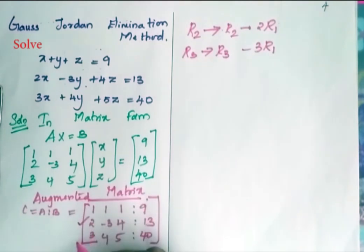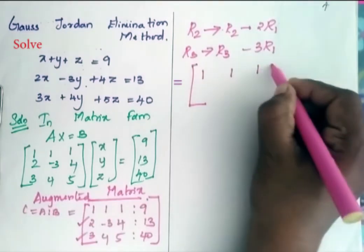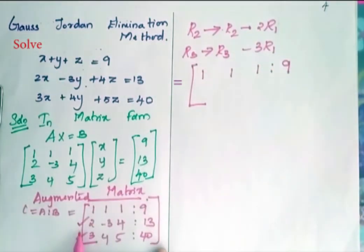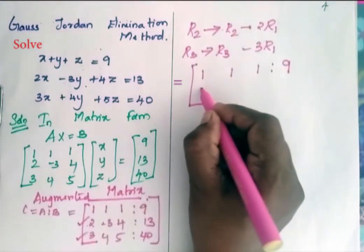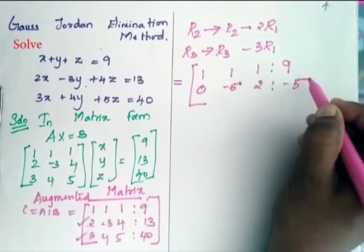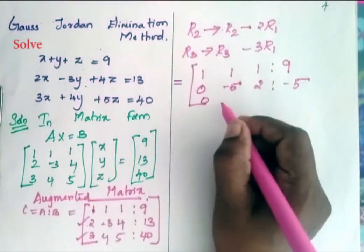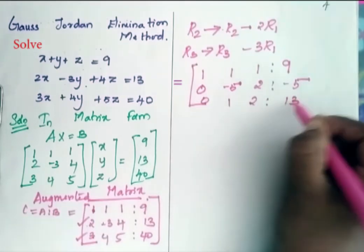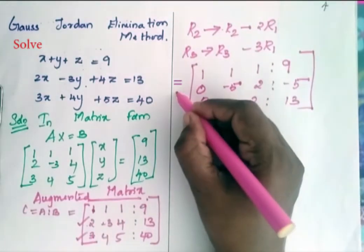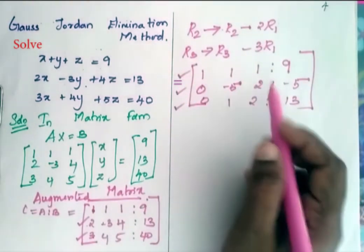Applying R2 = R2 - 2·R1, I get [0, -5, 2 | -5] for the new R2. Then applying R3 = R3 - 3·R1, I get [0, 1, 2 | 13] for the new R3. So now we have obtained zeros in the first column of R2 and R3. Now we should go for the next transformation.